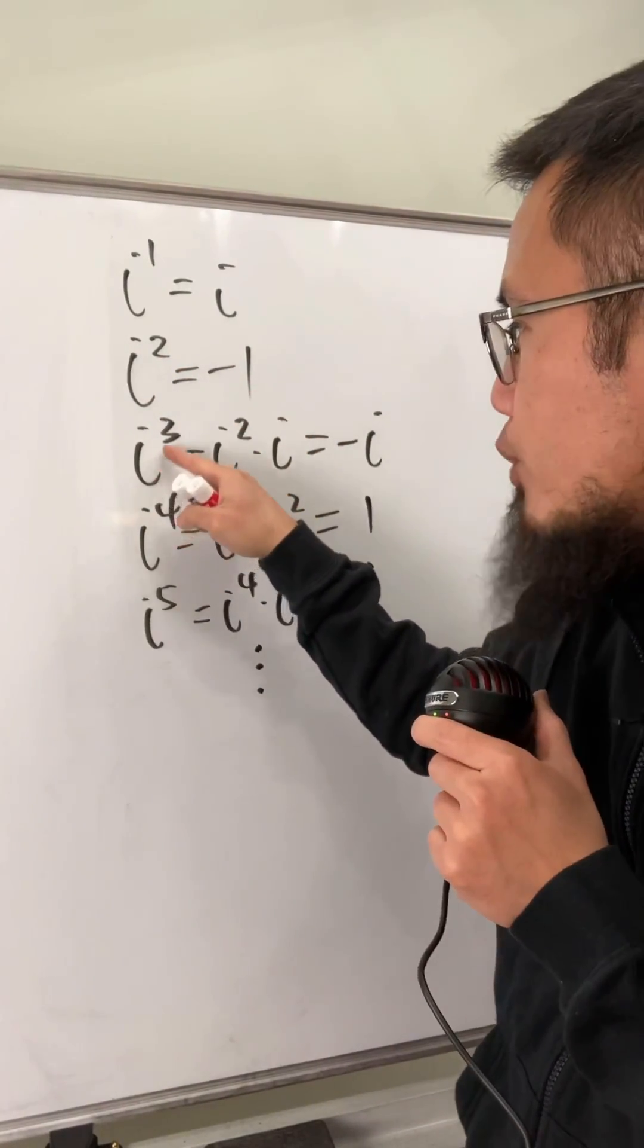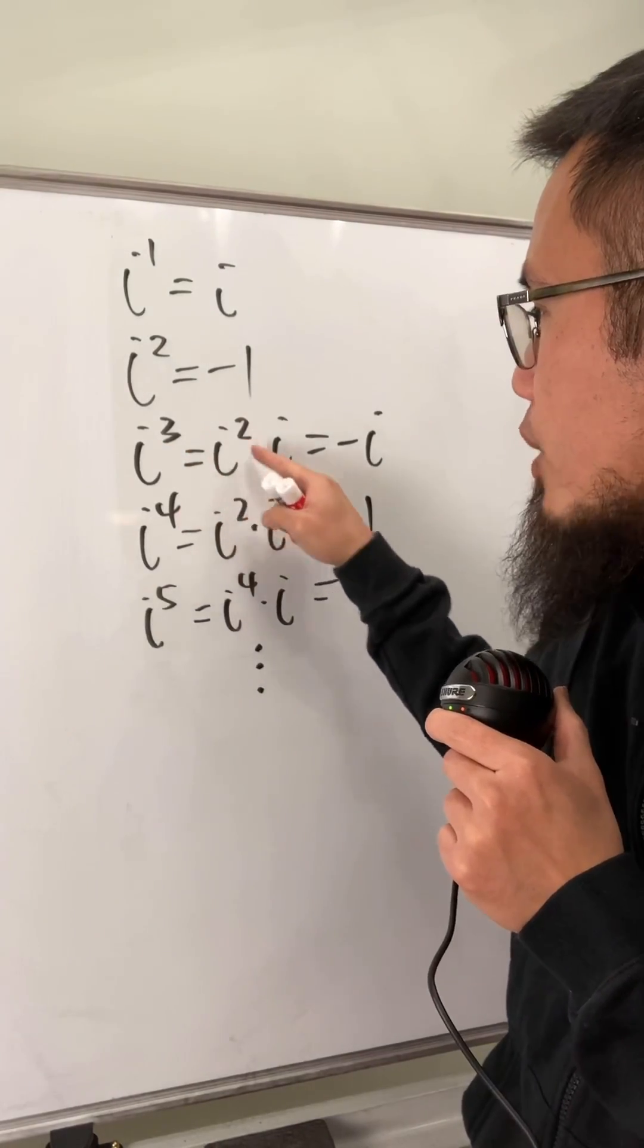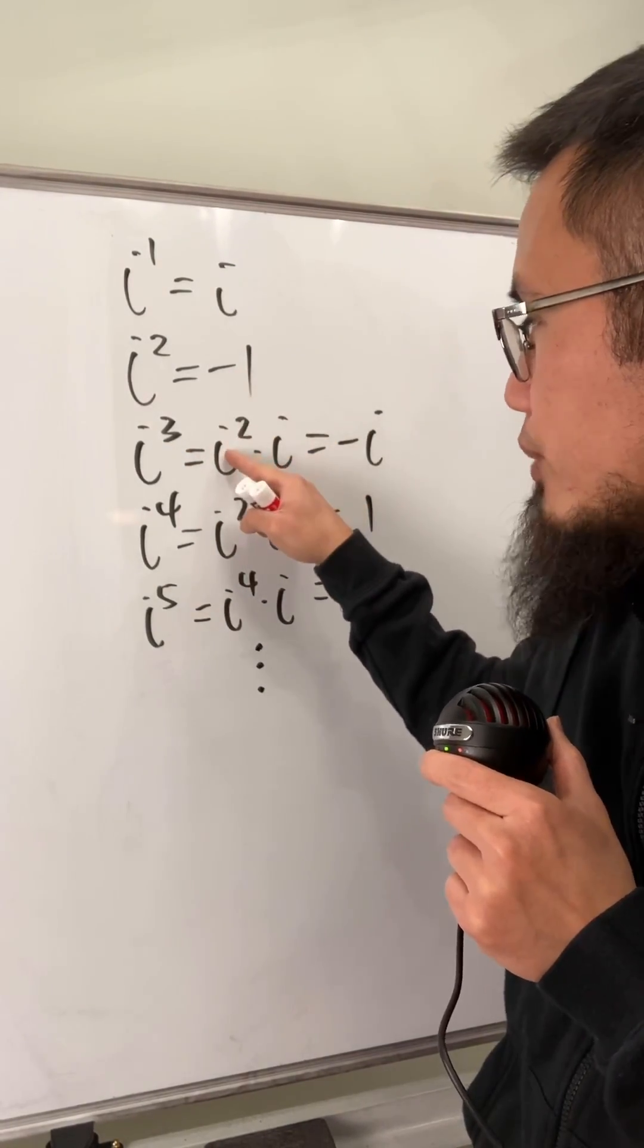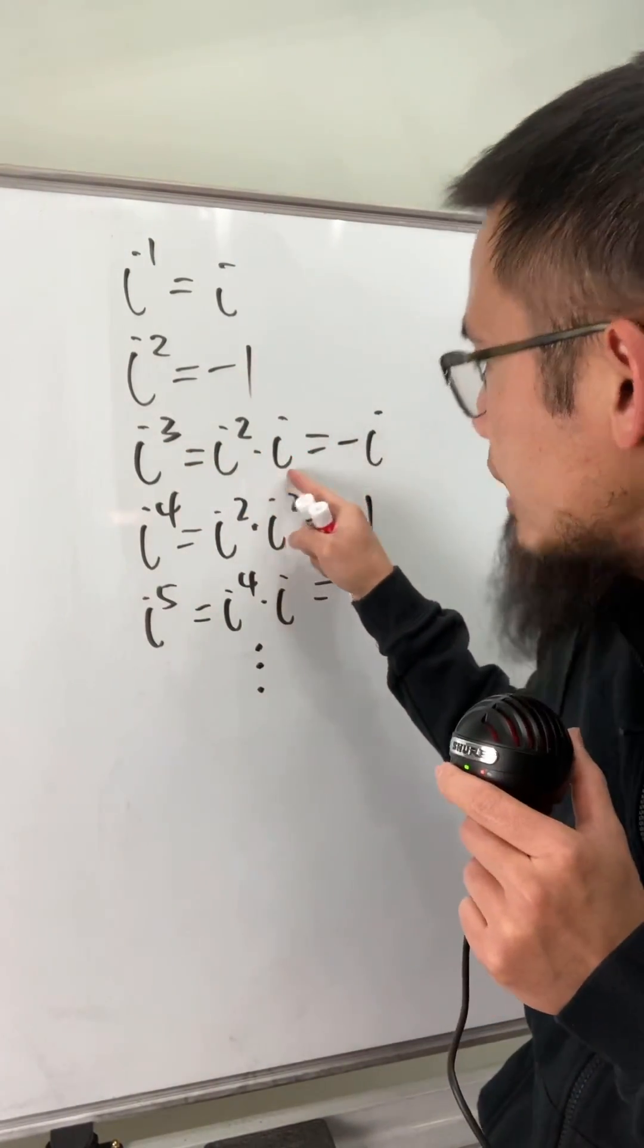And then if we have i to the third power, we can look at this as i squared times i. Well, this right here is equal to negative 1. Negative 1 times i, we just get negative i.